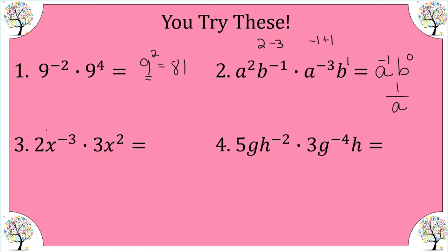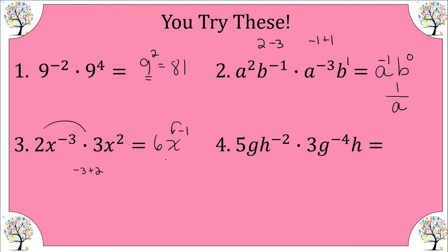Number three: two times three is six. We have a base of x, and we have negative three plus two, which gives negative one. The negative one is only attached to the x and not the six, so we have six over x to the positive one.